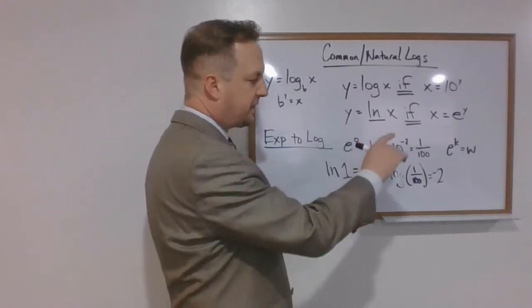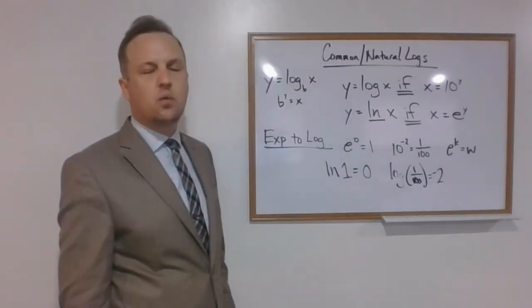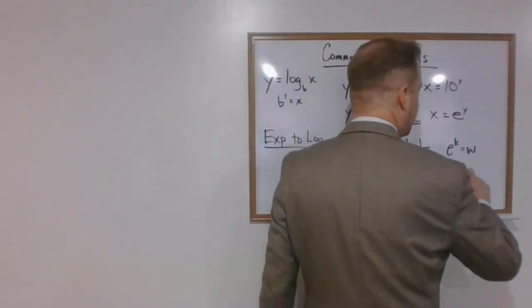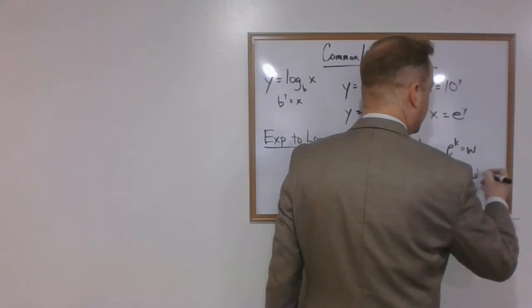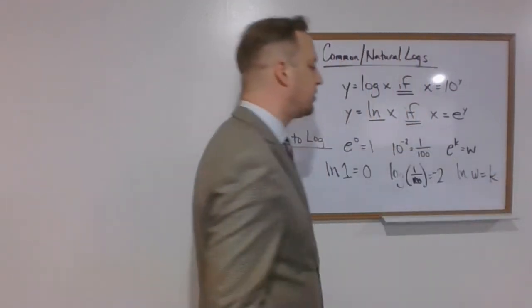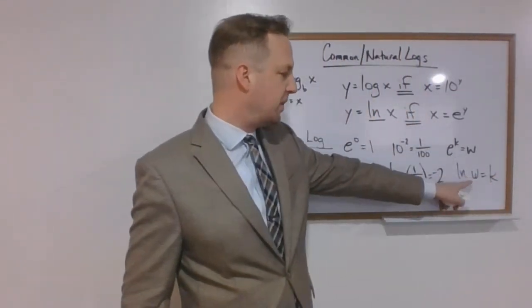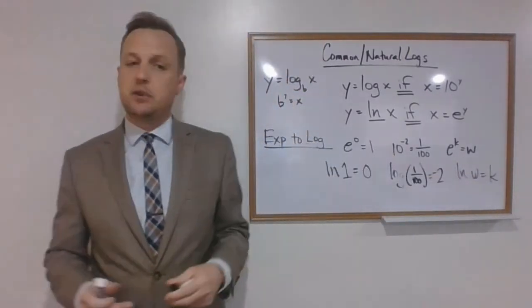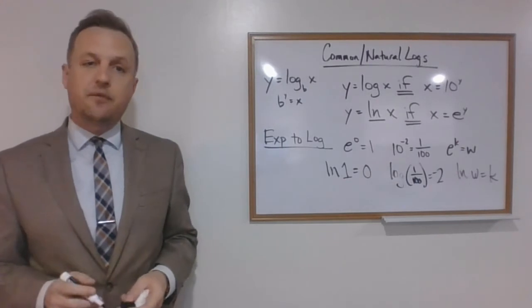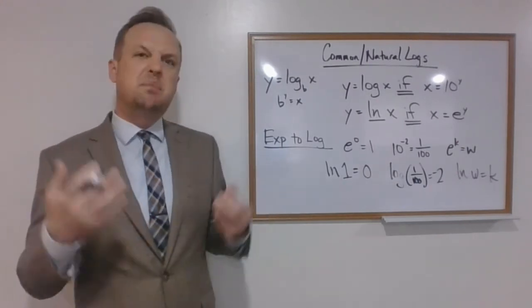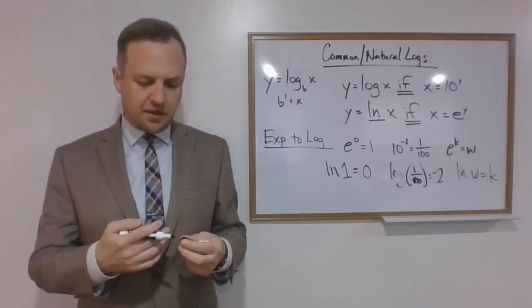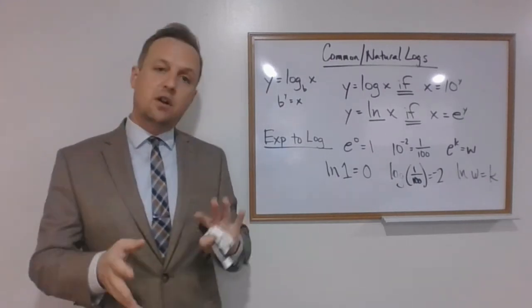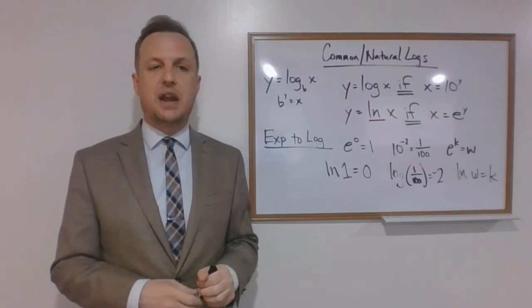We have e raised to the k power equals w. We know our base is e. So we're going to be working with natural logs here. So the natural log of w equals k. In other words, e raised to the k power equals w. These are conversions just like what we did before, only with specific and common base values that you see used over and over again. I'm going to show you two more examples, and then we'll be done for the day.